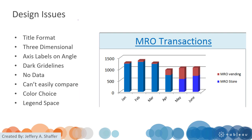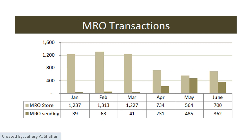Issues include the title format, the three-dimensional effect — we should not use 3D — the axis labels, dark grid lines, no data labels making it hard to compare, and a bad color choice. Also, it is not necessary to use a compound bar chart here. The improved version puts the different bars side by side, which makes it very easy to compare.